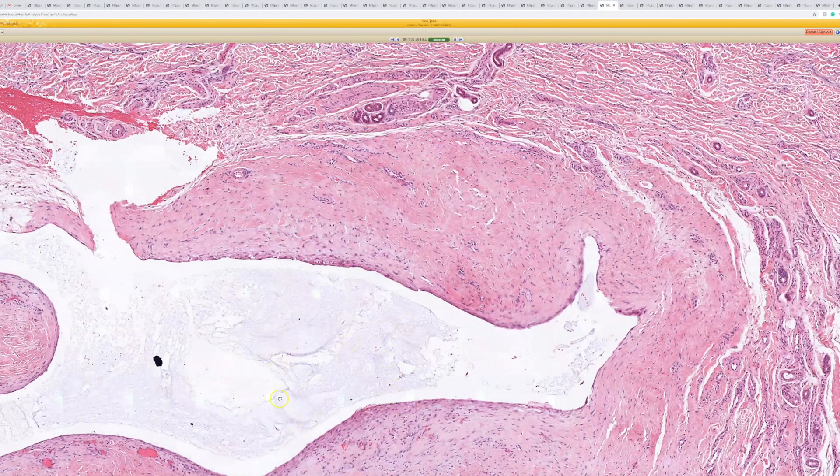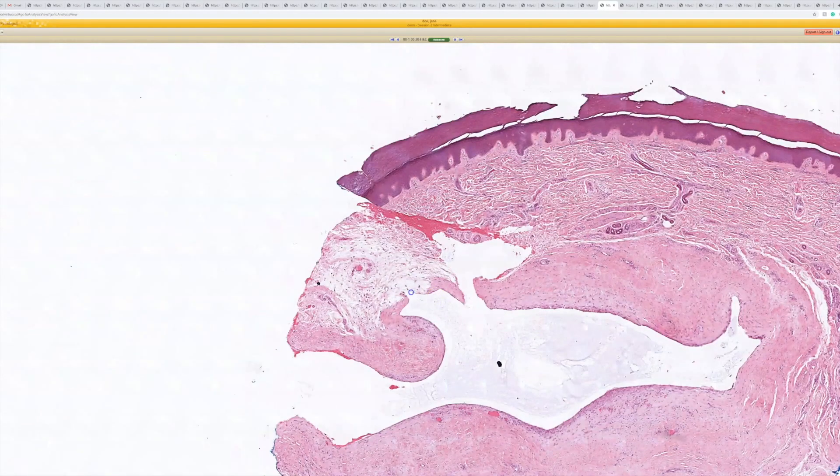You can actually see the mucus in there. Sometimes they can spill out and make a loose myxoid dermal change. Right here, perfect.